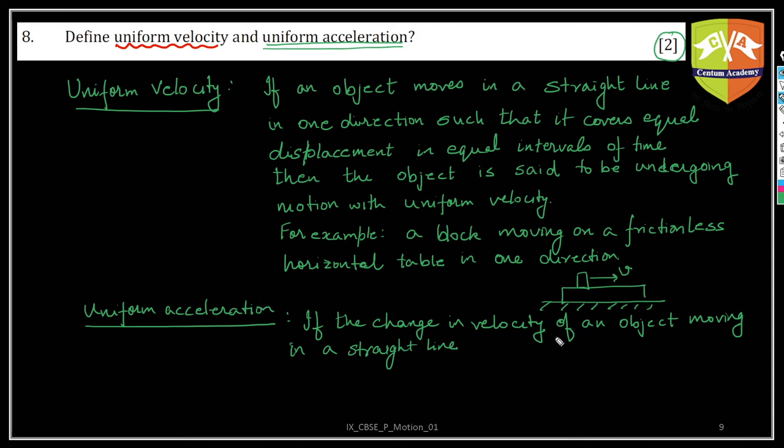Though you have already taken the word velocity, it's always good to highlight that the body object is moving in a straight line in the same direction. One direction, that is any one direction, right, left, up, down. If the change in velocity of an object moving in a straight line in the same direction is constant or equal in equal intervals of time. That means, let's say, if you're talking about one second each, so in every one second, same amount of velocity, the velocity difference in that one second will be same, should be same.